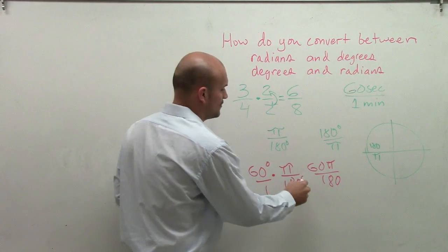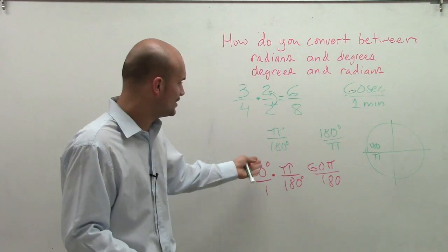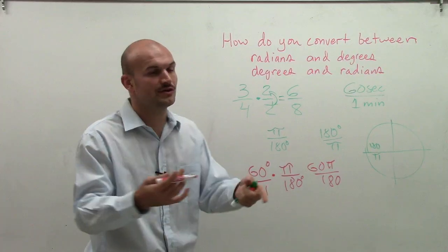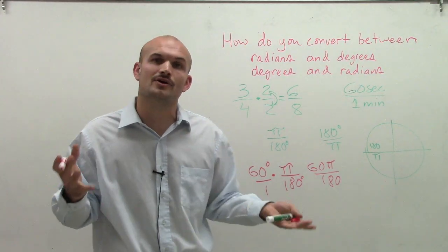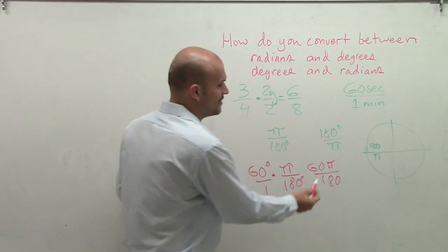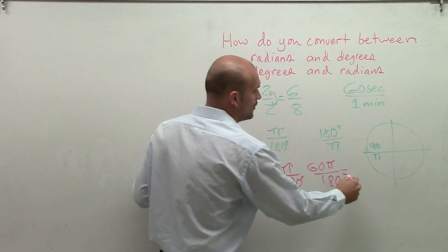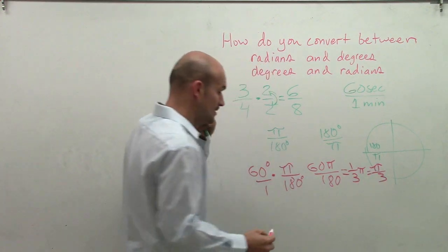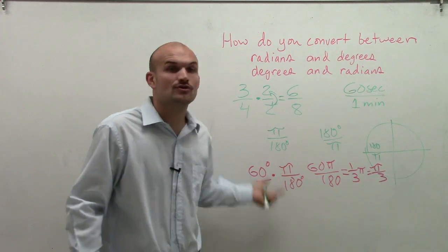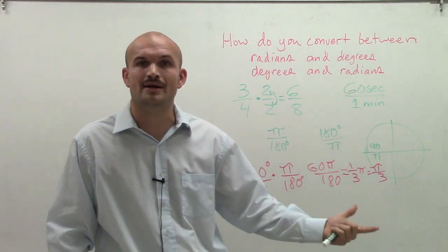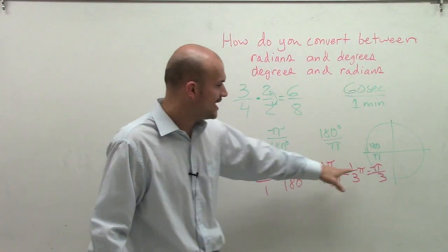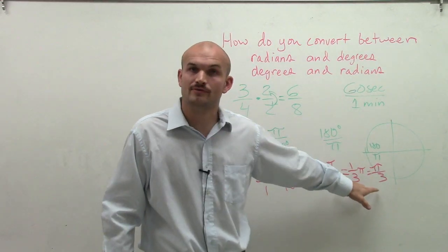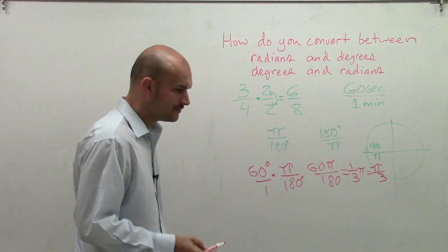Now what happened to the degree symbols? Remember the degree symbols divide out into 1. Because if you have 1 degree divided by 1 degree, your degrees are no longer relevant. Therefore, I'm just left with 60 divided by 180, which we reduce down to 1/3 π, which we write as π over 3. It's important for us to understand that our degrees, our units divide out into 1. Therefore, our only unit left is π. Therefore, I have now converted my angle from 60 degrees to π over 3 radians.